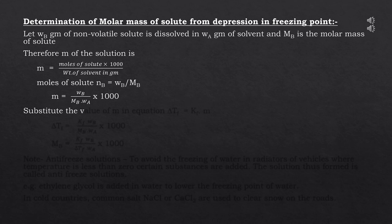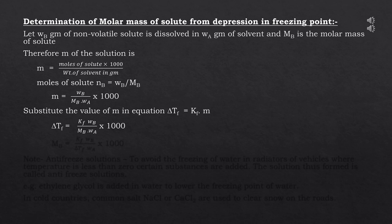Substituting the value of m into ΔTf = Kf × m, we get ΔTf = Kf × (Wb / Mb × Wa) × 1000. Rearranging, the molecular mass of the solute is: Mb = (Kf × Wb × 1000) / (ΔTf × Wa).